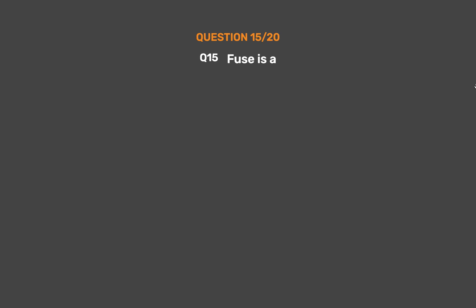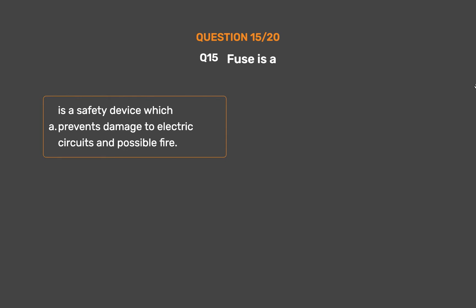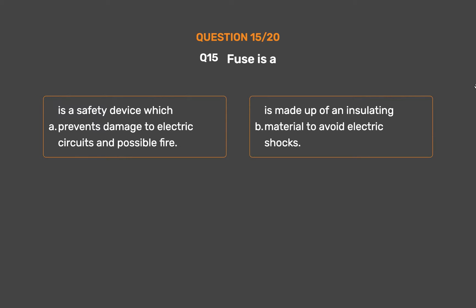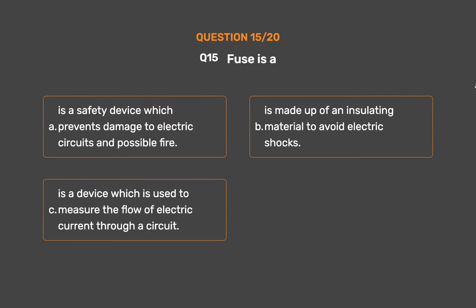Question number 15. Fuses: Option A: Is a safety device which prevents damage to electric circuits and possible fire. Option B: Is made up of an insulating material to avoid electric shocks. Option C: Is a device which is used to measure the flow of electric current through a circuit. Option D: All of the above.